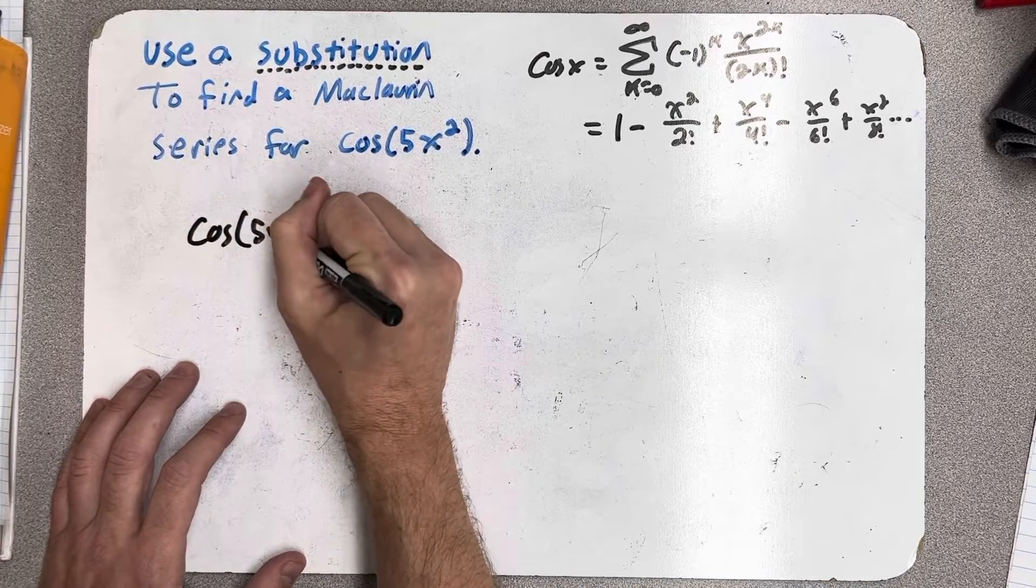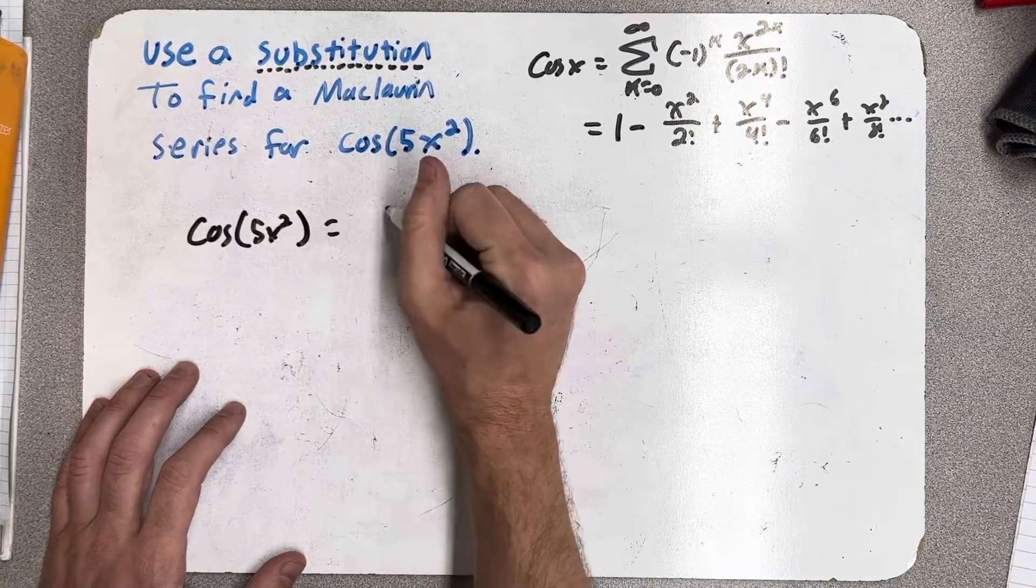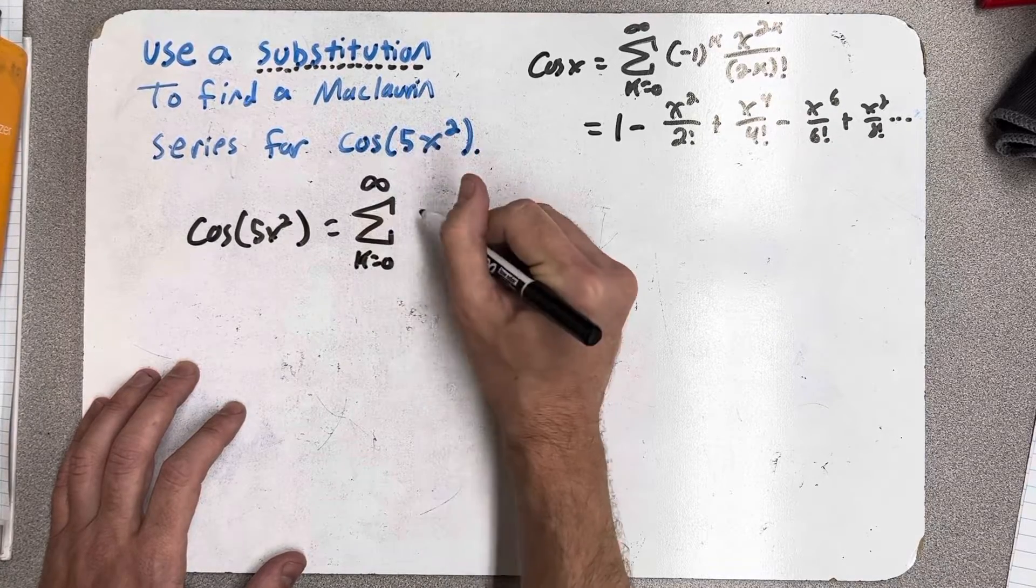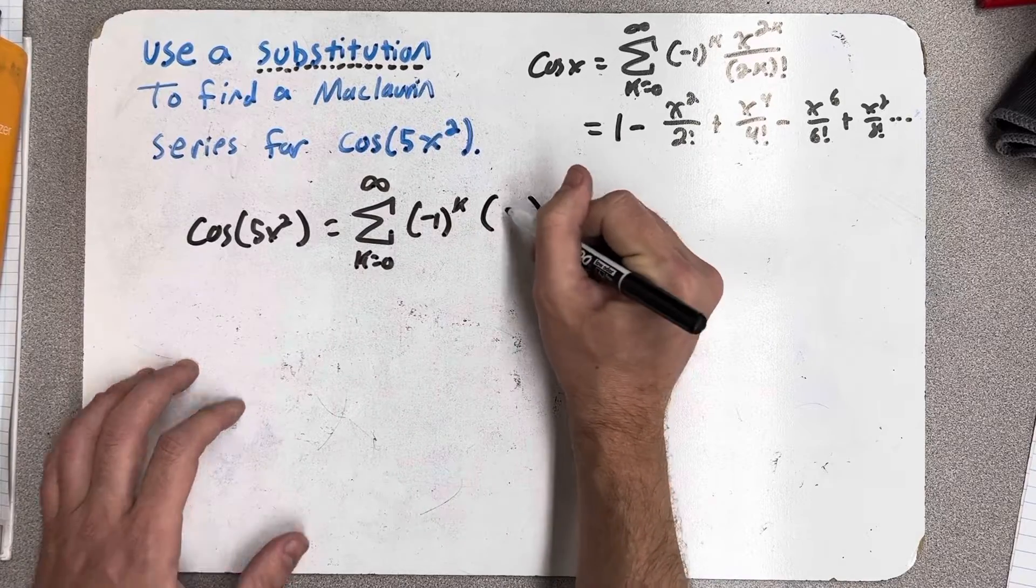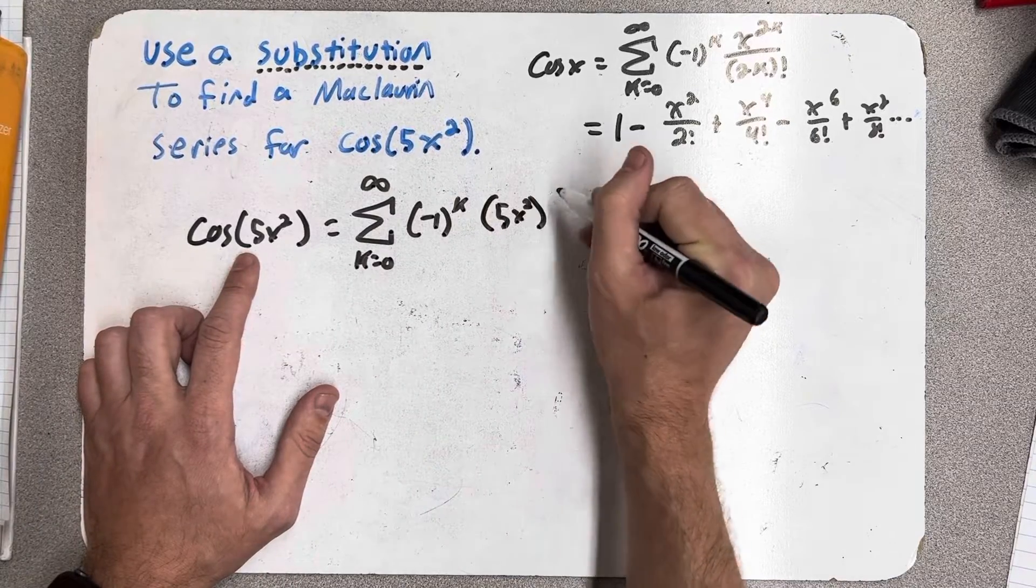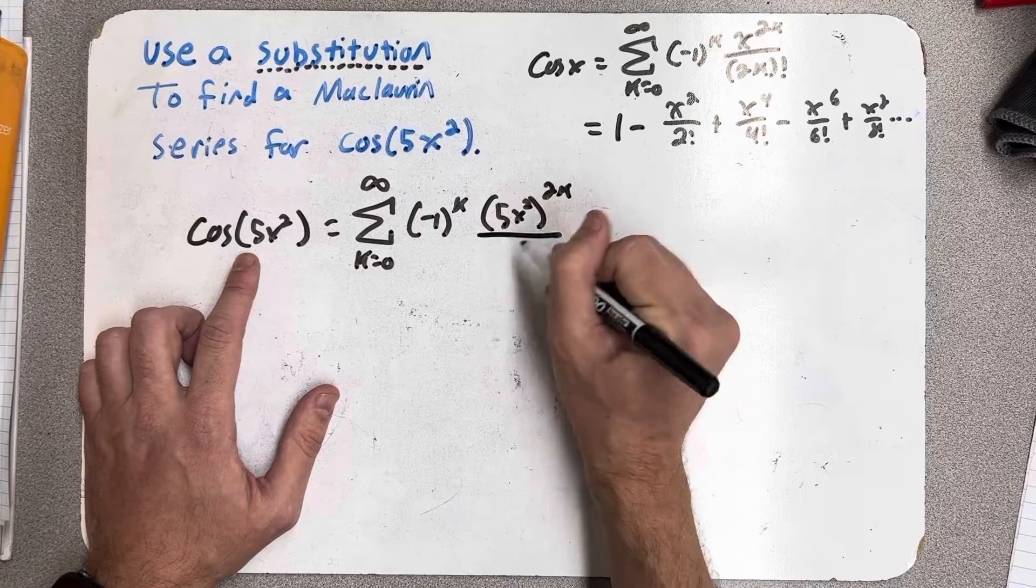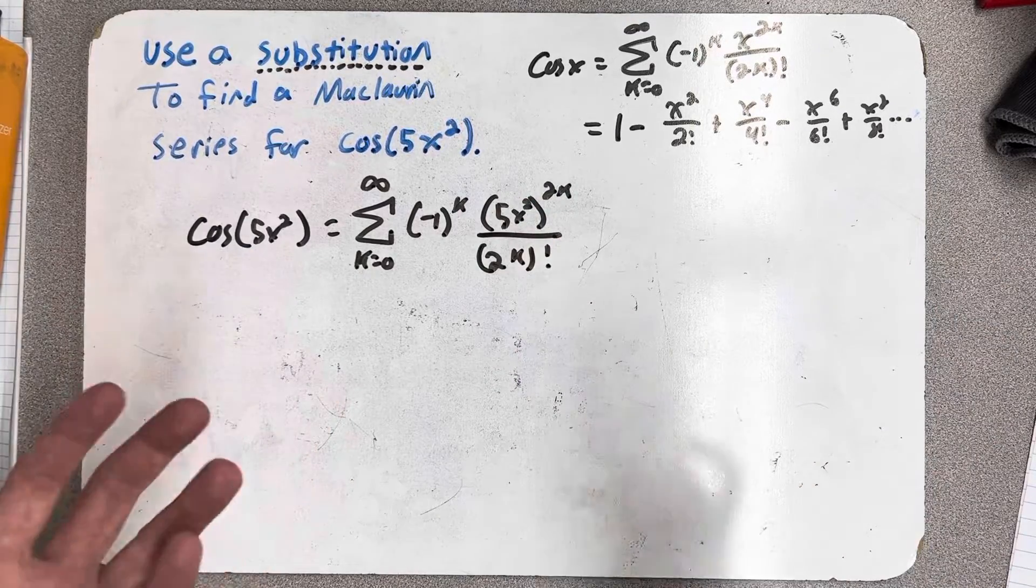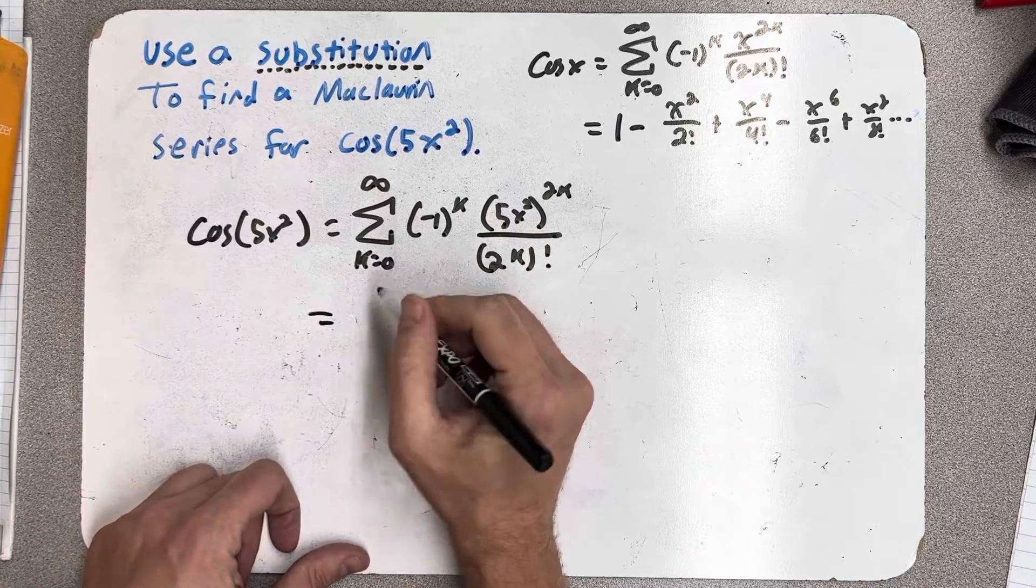So, here we go. And I just replaced x with 5x squared. Now, I don't want to leave it written like this. I guess right now, technically, I'm done, but I want to think about what this actually says.